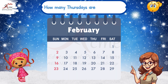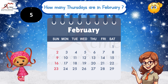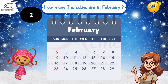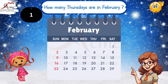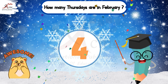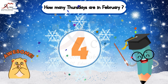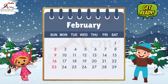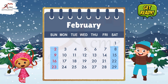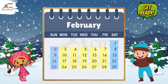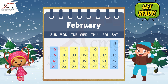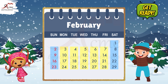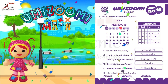How many Thursdays are in February? Awesome! There are 4 Thursdays in February. Now, let's color weekends blue and weekdays yellow. Weekends are Saturdays and Sundays, and weekdays are Monday to Friday. Well done, everyone!